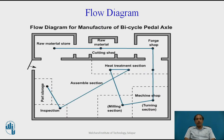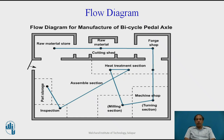This is an example of a flow diagram for manufacturing of a bicycle pedal. It starts with raw material taken from the store as the starting point. Once the raw material is taken, it is moved to the cutting shed where the raw metal is cut into the required size. After cutting, it goes to the forging shop where forging of the component is done. After forging, it comes to the machine shop where there are two operations: turning and milling.